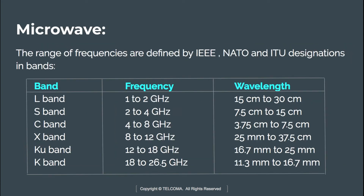The range of microwave frequency bands is defined by IEEE, NATO, and the ITU — the International Telecommunication Union. The first is the L band, defined by IEEE radar, used in low-earth satellite services, military services, mobile communication, and GPS and GNSS technology. The L band is also defined by the ITU and NATO.